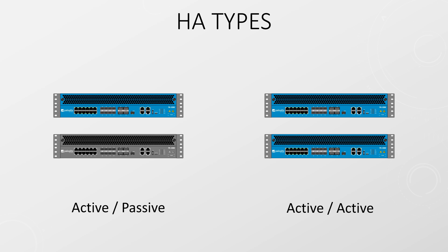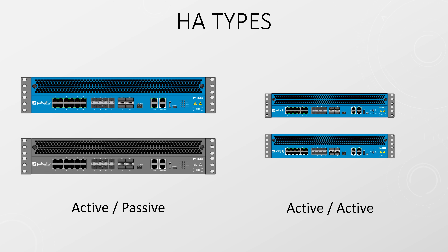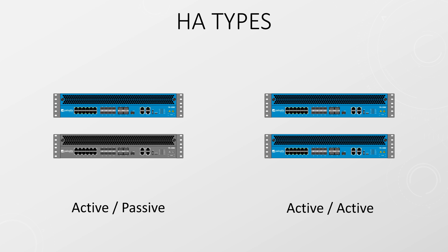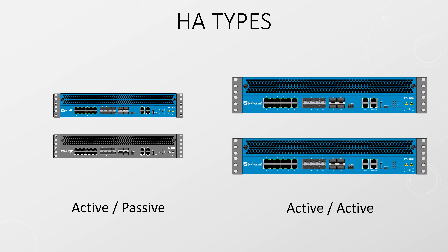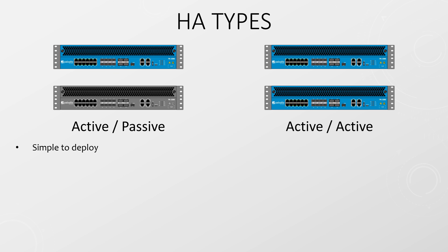When it comes to high availability, Palo Alto firewalls use the same two options as everyone else. Option one is active-passive, where one firewall is in a passive state waiting to take over if there's a failure. Option two is active-active, where both firewalls actively pass traffic. Active-passive is the simplest type of HA to deploy. In this model, one firewall is analyzing and passing traffic, learning routes and routing protocols, maintaining session information, and so on. The second firewall is turned on and physically connected to the network but does not do much — that's why it's called a passive firewall. It's just waiting until it's needed.